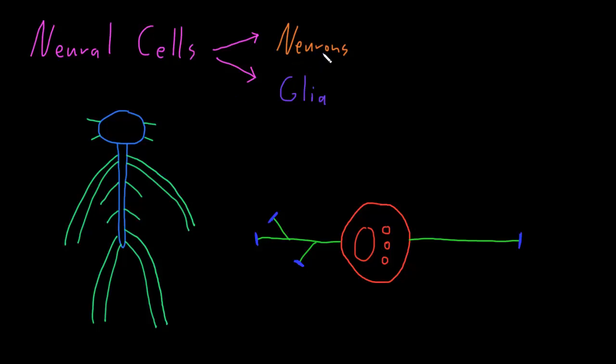The function of neurons is to process and transmit information, and the function of glia is to support them in a variety of ways. There are many structural and functional types of both the neurons and the glia, and there are large numbers of these cells making up the nervous system. There are billions of neurons that form trillions of connections in the adult human nervous system, and there are even more glia than there are neurons.